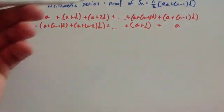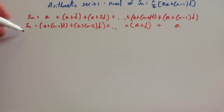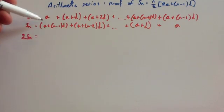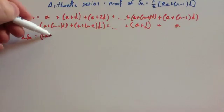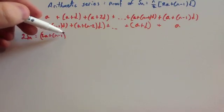Now, what we're going to do is we're going to add the two series together. So sn plus sn would be 2sn. a plus a plus n minus 1d would be 2a plus n minus 1d.